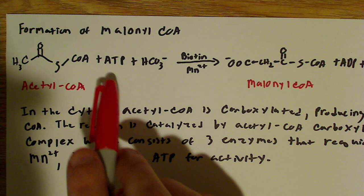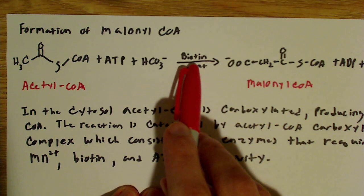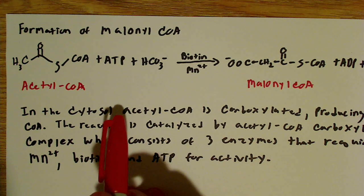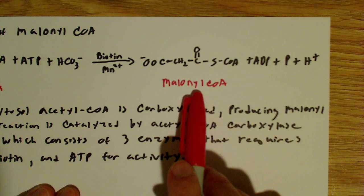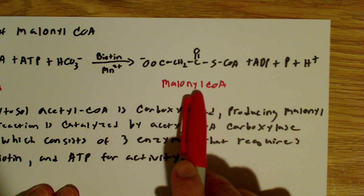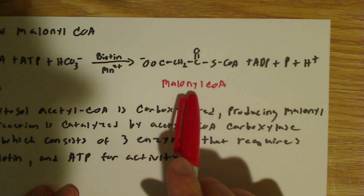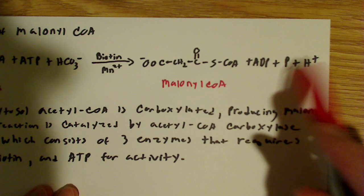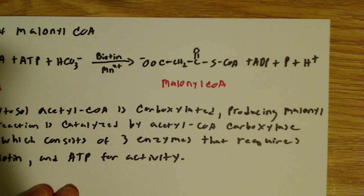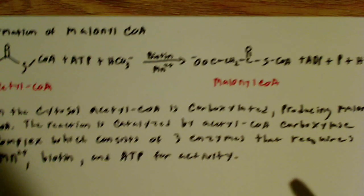The inputs are ATP, biotin, and bicarbonate ion, and after the reaction the products formed are malonyl-CoA, ADP, inorganic phosphate, and H+. That's pretty much how the reaction looks overall.